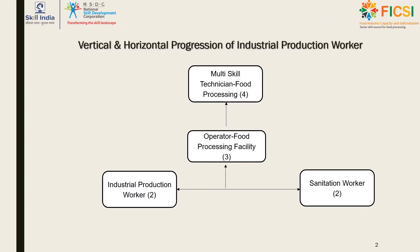Let us talk about the vertical and horizontal progression of an industrial production worker. An industrial production worker can obtain training for sanitation worker at the same NSQF level as horizontal progression and increase his or her scope by looking at a larger domain. The vertical progression for an industrial production worker is an operator at a food processing facility, where a person can enroll after obtaining 2 years of work experience as an industrial production worker or a sanitation worker. Moreover, the person can become a multi-skilled technician by gaining further work experience of 2 years.